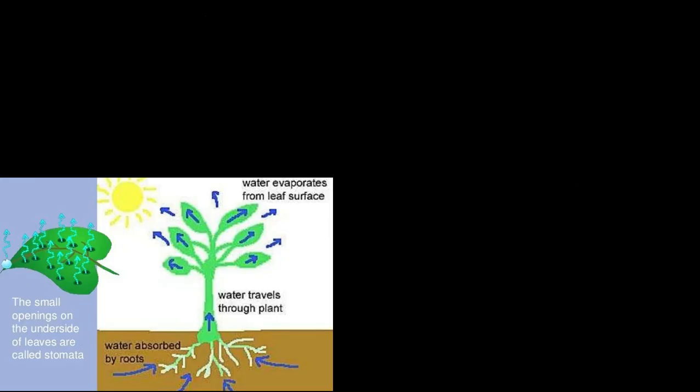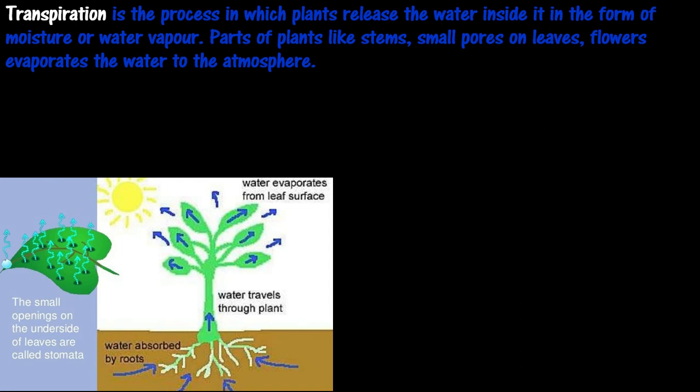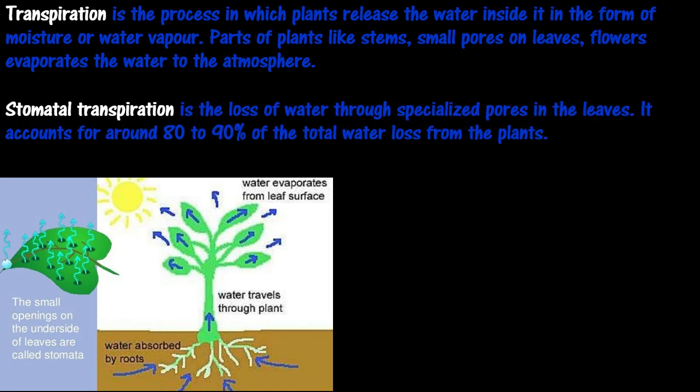Transpiration is the process in which plants release the water inside them in the form of moisture or water vapor. Parts of plants like stems and small pores on leaves and flowers evaporate water to the atmosphere. Stomatal transpiration is the loss of water through specialized pores in the leaves, accounting for around 80 to 90 percent of the total water loss from plants.